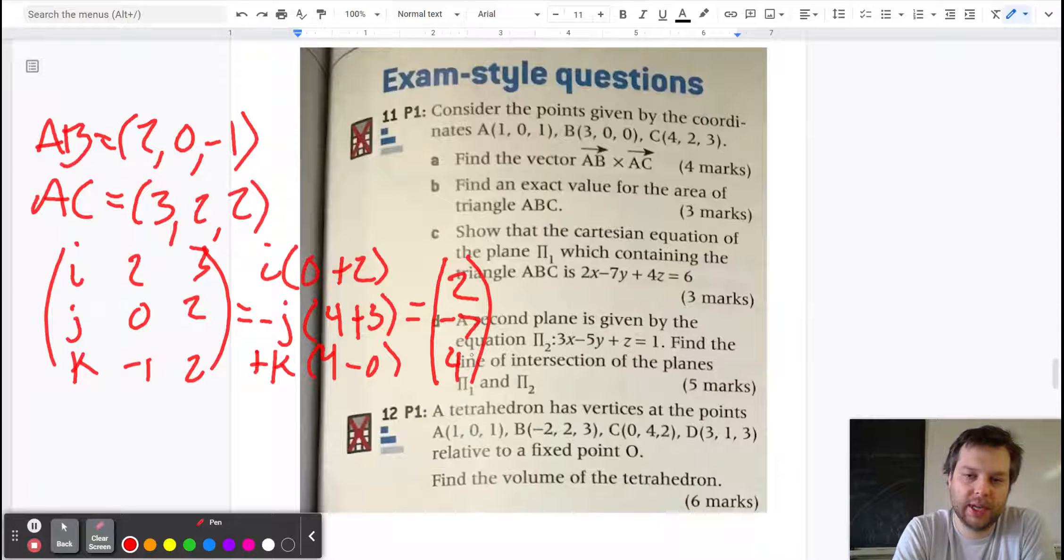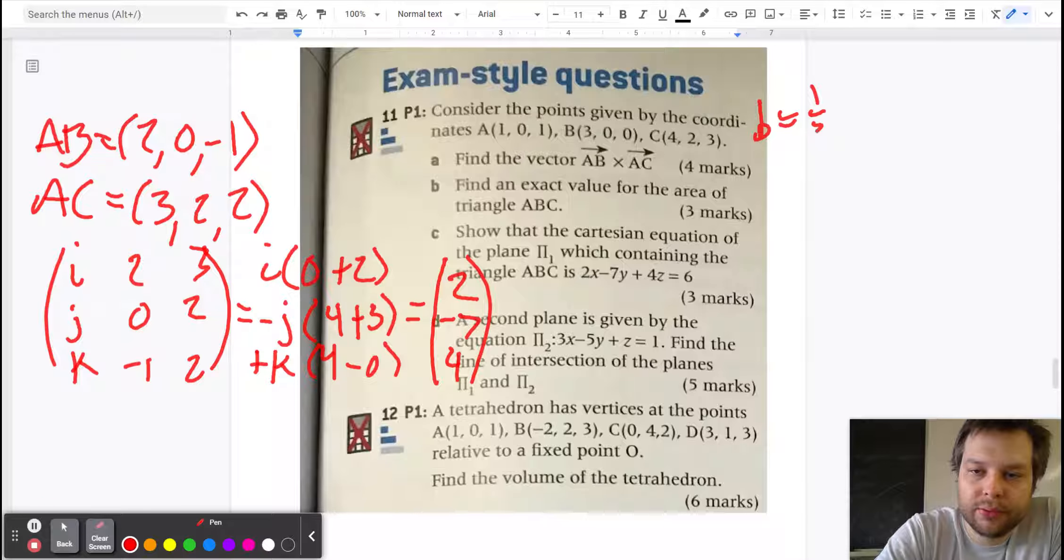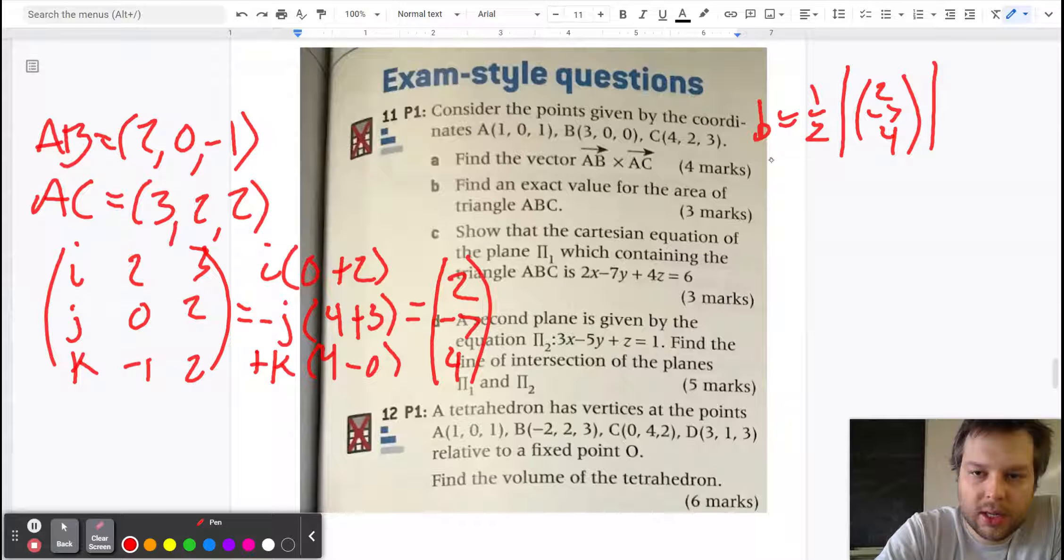So what we have to do in order to answer part b is just do one half times the magnitude of the vector that we just found (2, 7, -4).